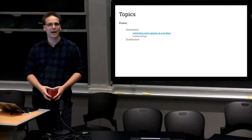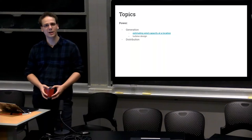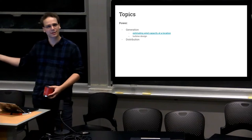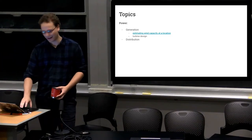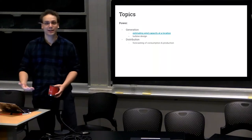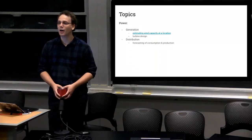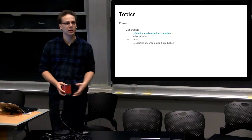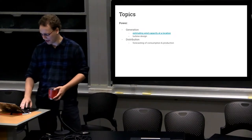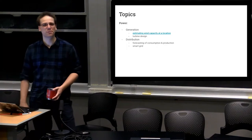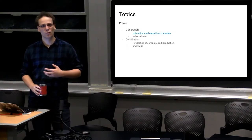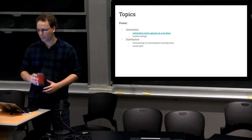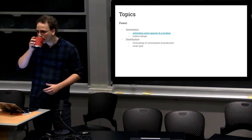And the other big problem is distribution. Right, we can produce as much power as we want in the Baltic Sea or in the North Sea with wind turbines, but if we don't get the power to where it matters or where people are living and using it, that doesn't help us. Forecasting of consumption production is an easy one that comes to mind there. We, computer scientists, are great at building models. Building better models that forecast production and consumption would be really helpful. This all falls into the topic of smart grid.